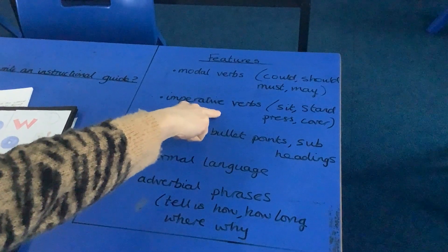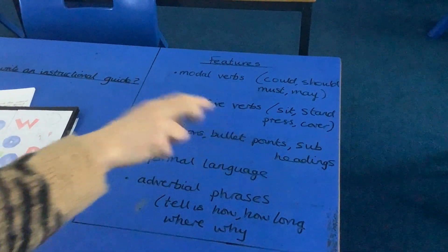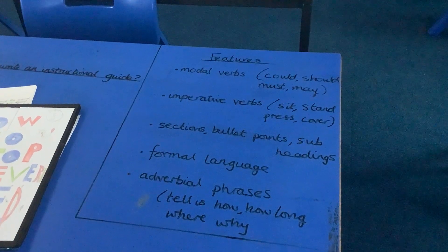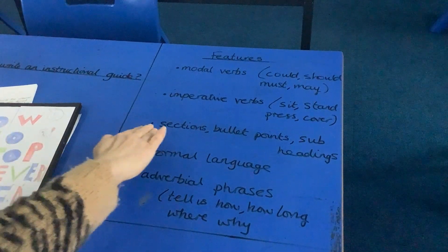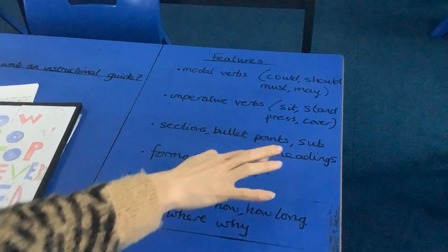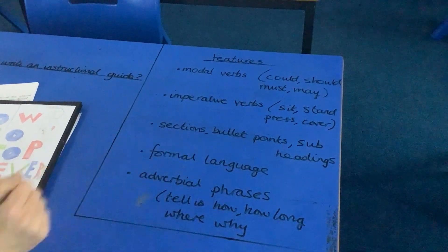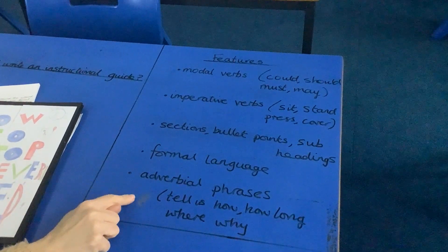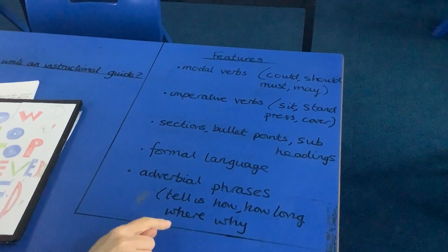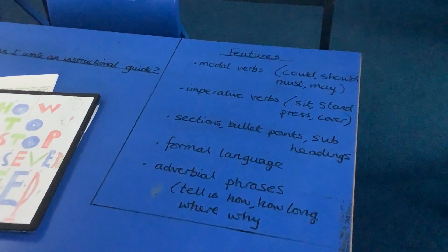The imperative verbs — you won't be able to write it without using these: sit, stand, press, cover, remove, check. Obviously I want you to set it out in a way where you've got sections, bullet points, subheadings. I'm hoping you've used formal language and adverbial phrases that tell us how, how long, where and why you're doing different things.